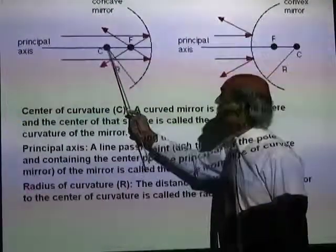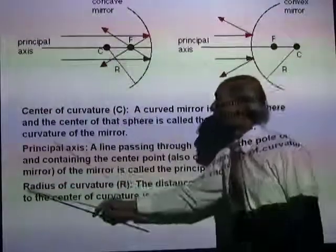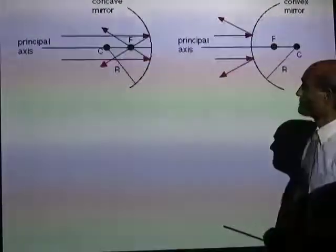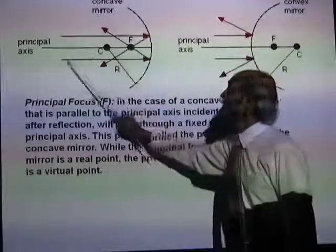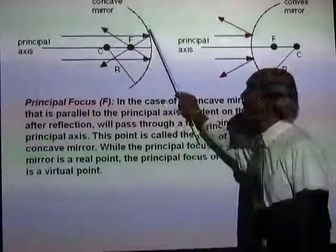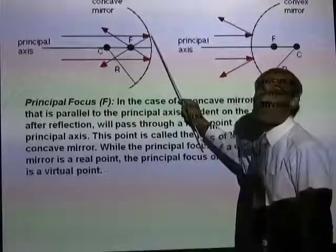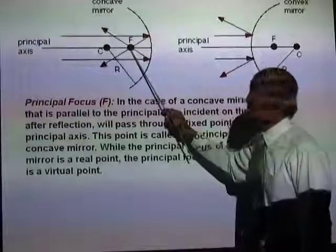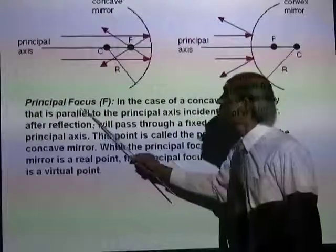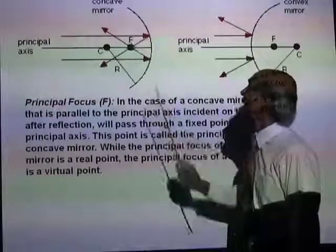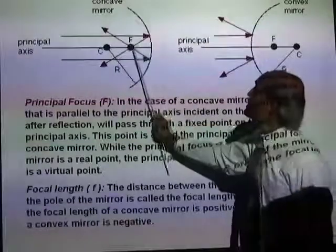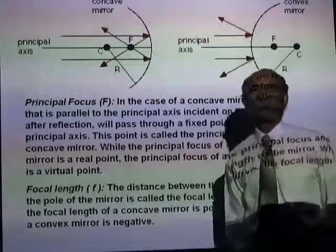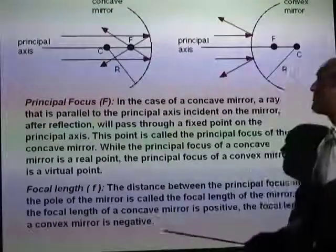The distance from the center of curvature to the center of the mirror is called the radius of curvature, represented by uppercase R. If you allow a set of parallel light rays to hit the mirror, the reflected rays will pass through a point on the principal axis called the principal focus, represented by F. The distance from the principal focus to the mirror is called the focal length of the mirror.